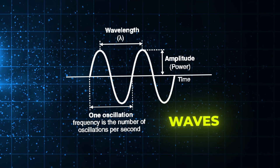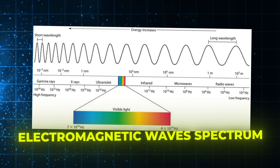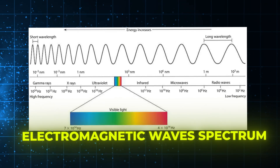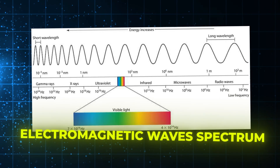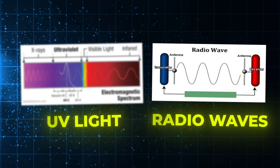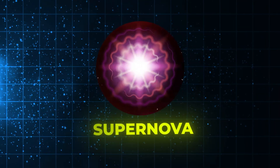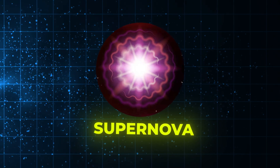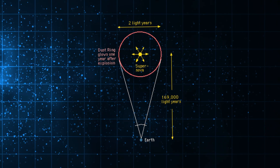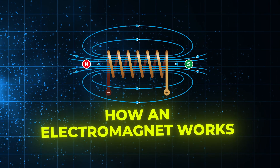The first thing I want to talk about is waves. Make sure that you know all the general properties of each kind of wave in the electromagnetic spectrum and be able to compare them with one another. In particular, make sure you know UV light and radio waves very well. Also know other key concepts such as the Big Bang Theory, supernovas — including their distances from Earth and their life cycle — and how an electromagnet works.